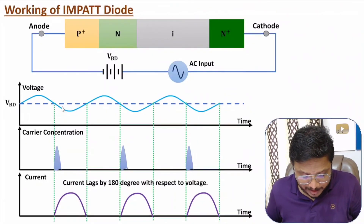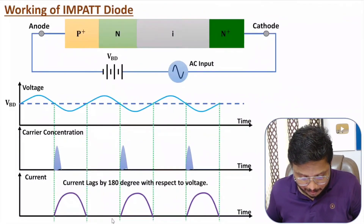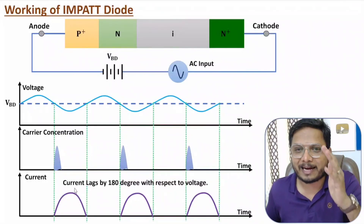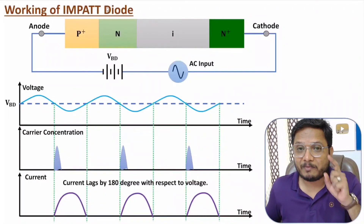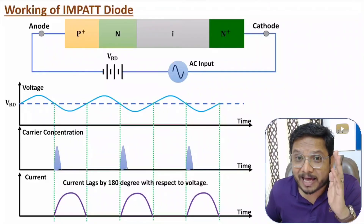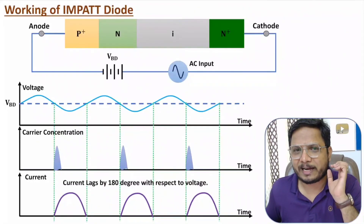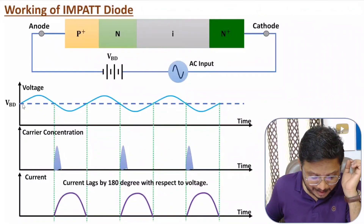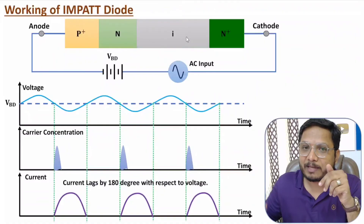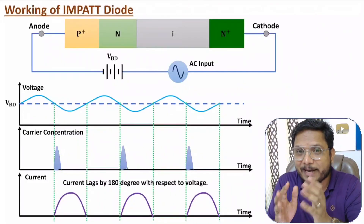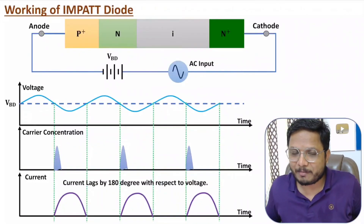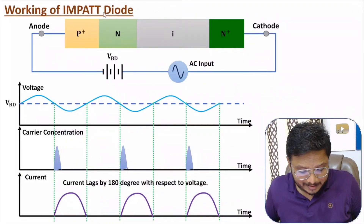When voltage is negative, there is a flow of current — meaning as voltage decreases, current increases. This is negative resistance characteristics. IMPATT diode functions on the verge of breakdown because it has lower reverse recovery time. Other diodes cannot be utilized in breakdown, but IMPATT diode, having very low reverse recovery time, can be utilized there.